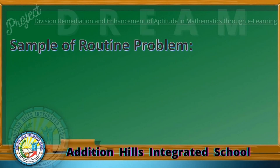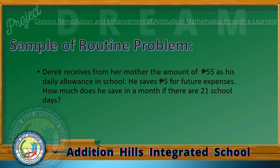Sample routine problem: Derek receives from his mother the amount of P55 as his daily allowance in school. He saves P5 for future expenses. How much does he save in a month if there are 21 school days?